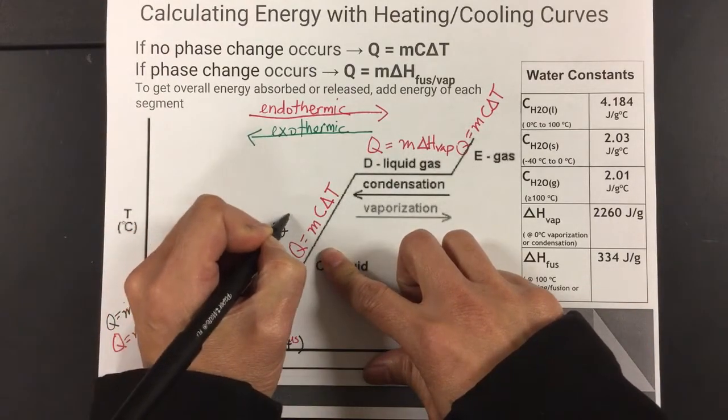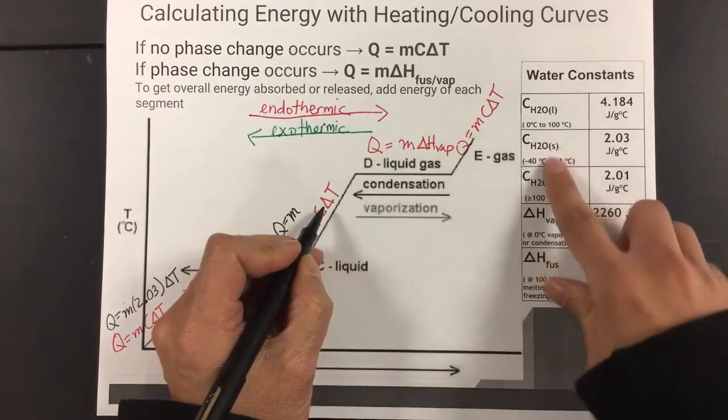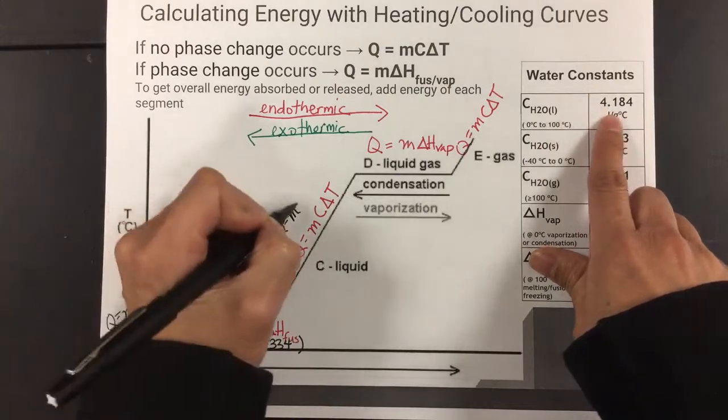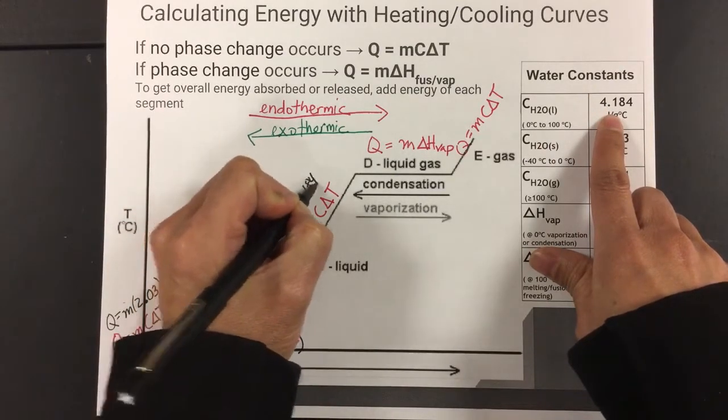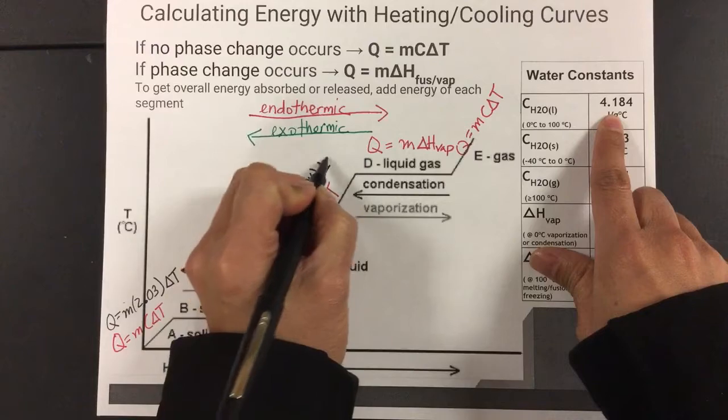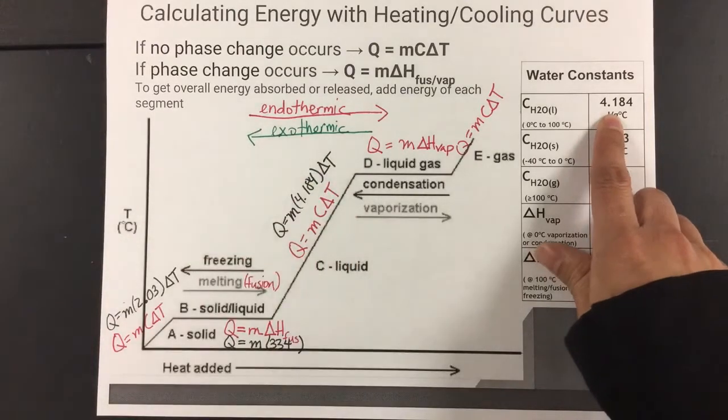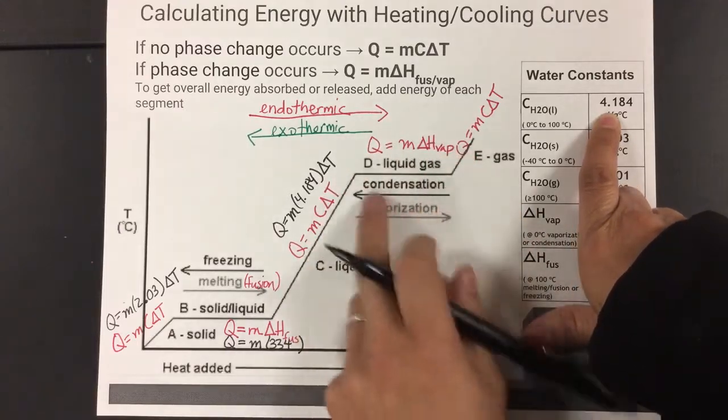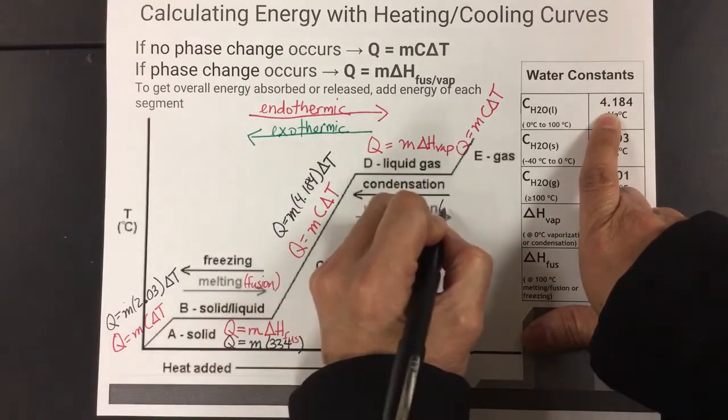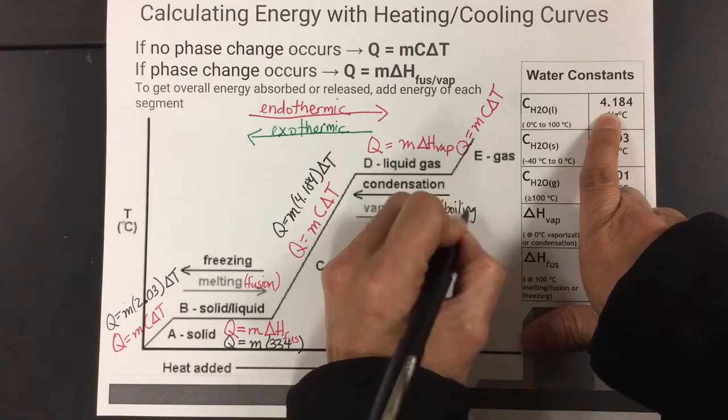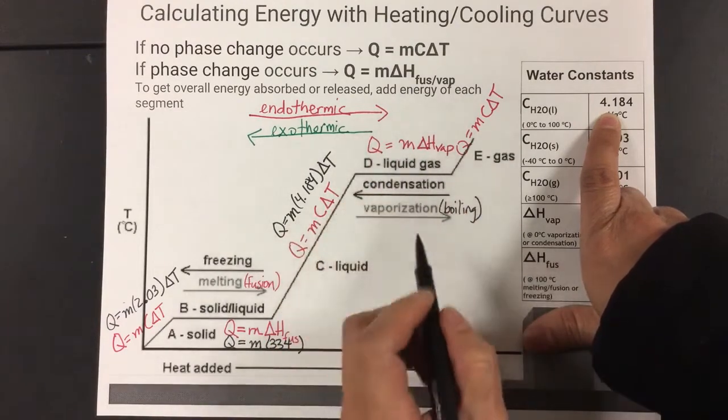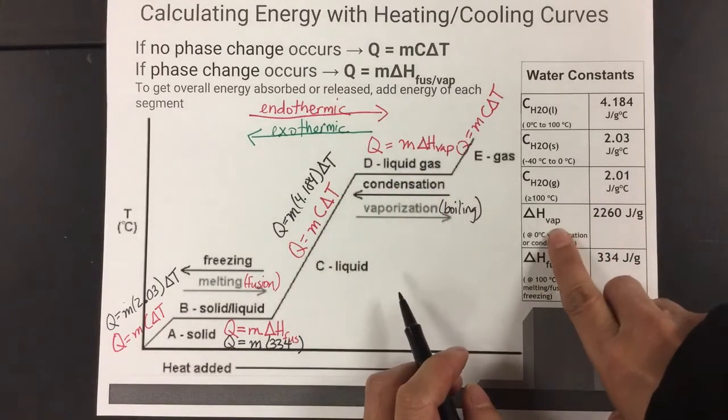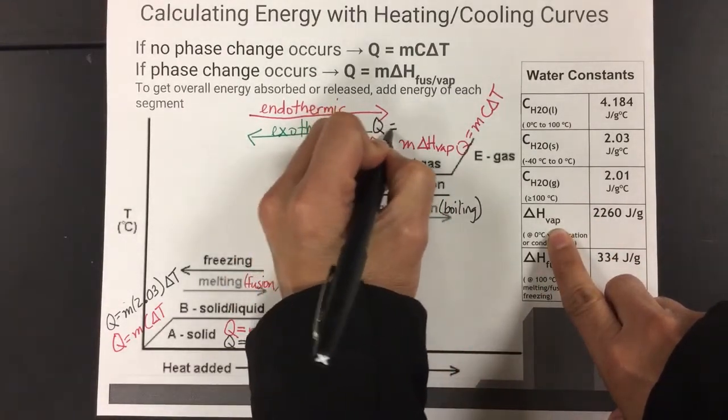So now we go across for water, Q equals m times C of water, liquid water, and it's a liquid at this state. So we put 4.184 times ΔT in right there. Now we go across where there's a phase change of vaporization or condensation. Again, this could also be termed as boiling as well. During this phase change, what you're looking at is the ΔH of vaporization. So we're going to put the value in for water.